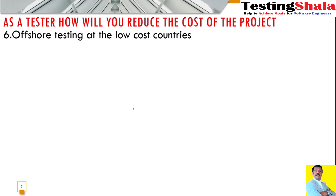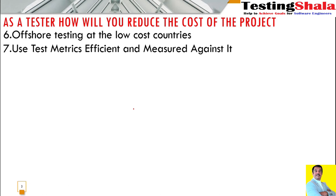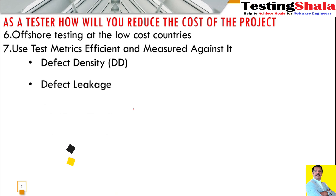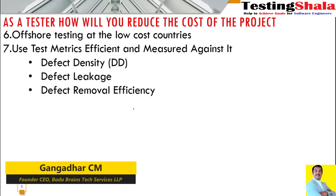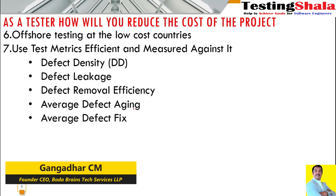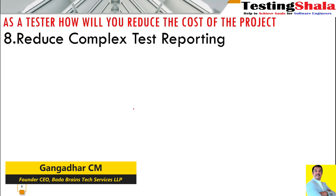The seventh important thing is we want to use our test metrics efficiently. As and when we start measuring the test metrics very effectively and efficiently on every activity we perform in the testing project, we can measure things, track how efficiently we are doing, and fix any gaps.